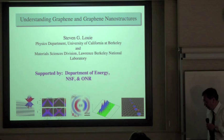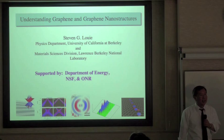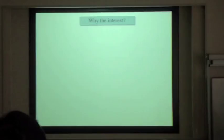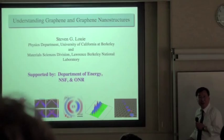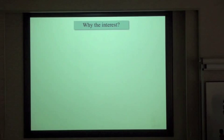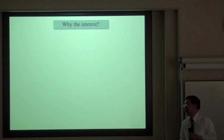As most of you know, graphene is just a single atomic layer of graphite. Why is there so much interest in graphene? It turns out that graphene as a material is really extraordinary in many respects. For example, it is a truly two-dimensional crystal.